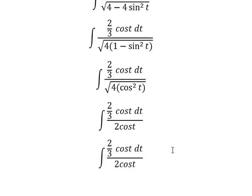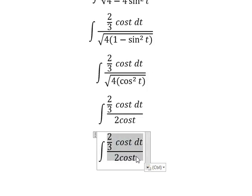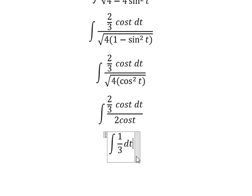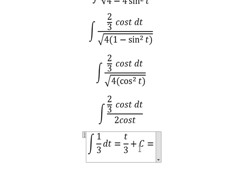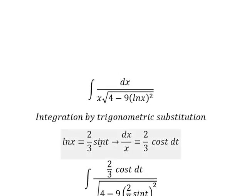And now we simplify, so we have 1 over 3 dt. The integration of this one we have t, about t that is about this one, so we need to divide both sides by 2 over 3.